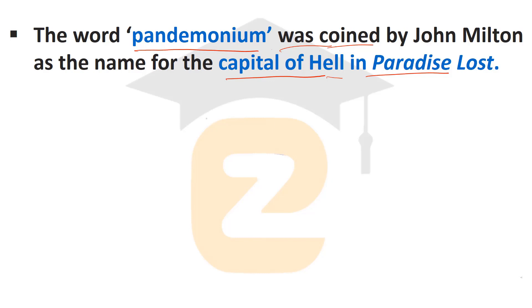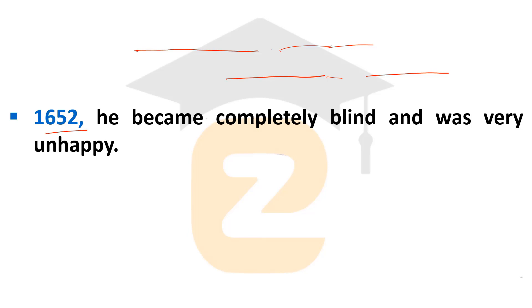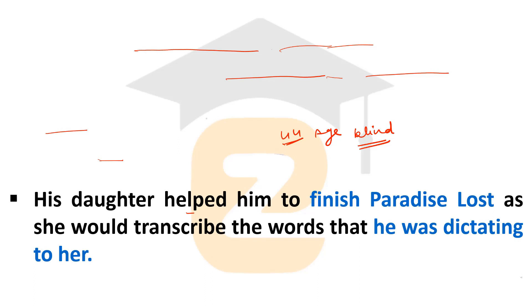In 1652, John Milton became completely blind, which was very unfortunate. He went blind at the age of 44, while he was still writing Paradise Lost.